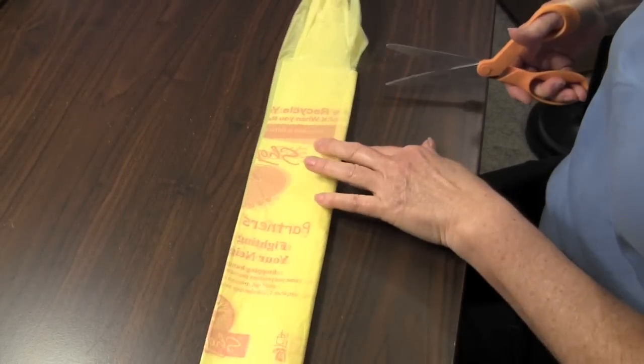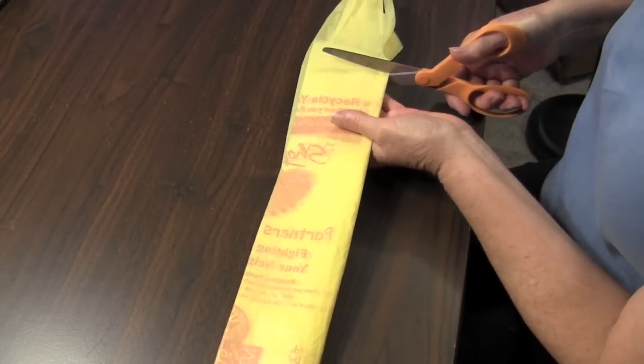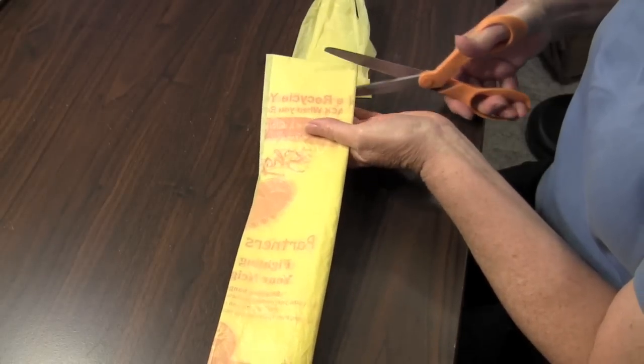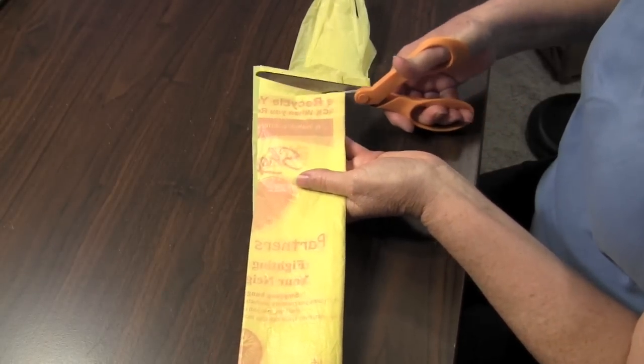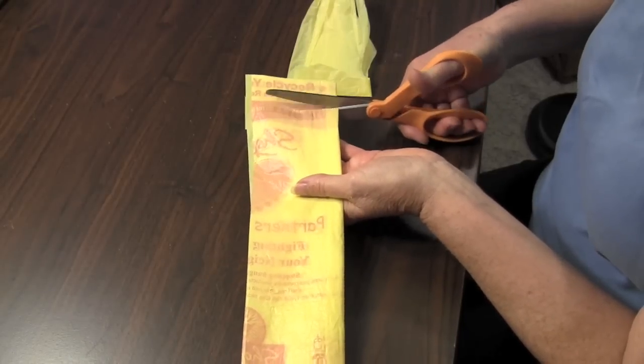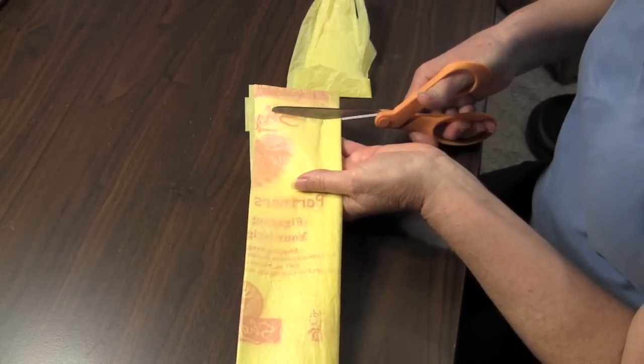With a scissor or rotary cutter, cut off the top handles. Then cut the bag into strips about 1 inch wide, forming loops and discarding the glued end.